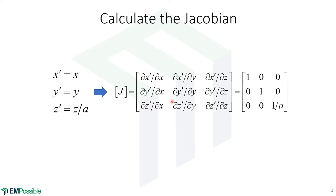y prime equals y. So we only have a derivative of anything other than 0 at the center position. Derivative y prime with respect to y is 1. With respect to any other variable, we get 0. And then finally, we have the derivative of z prime with respect to x, y, and z. Well, it's only a function of z, so we have 0s in the x and y positions. But in the last position, we have 1 over a. So we have a very simple Jacobian.